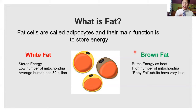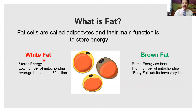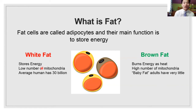So that describes the normal fat called white fat, and that's what we think about when we normally talk about fat. It stores energy, it has a low number of mitochondria, and the average human has 30 billion white fat cells, which is a lot of cells in your body.